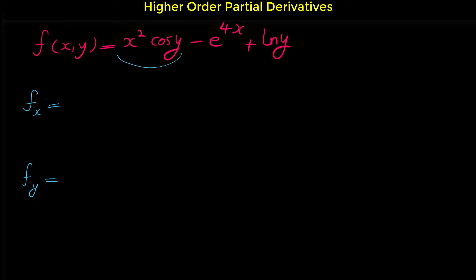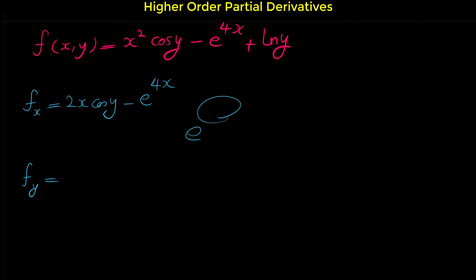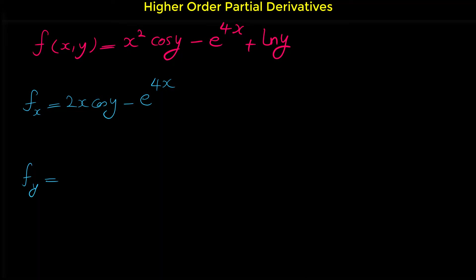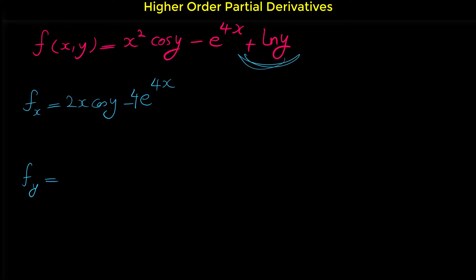The derivative of x squared cosine y with respect to x is 2x cosine y — we take the derivative of x squared, which is 2x, and multiply by cosine y, which is the constant. The derivative of e to the 4x is e to the 4x times 4 — the derivative of e to any expression is the same function, but don't forget to multiply by the derivative of the exponent, which is 4. The derivative of ln y with respect to x is 0, because there is no x in that term.